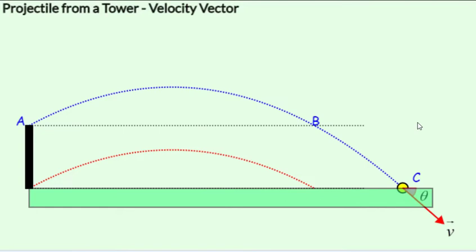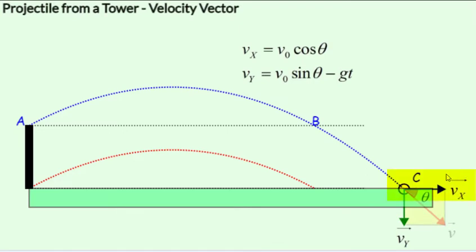What about the velocity vector? Let's watch the animation. The x component of the velocity vector, v0 cos of theta or vx, continues to remain constant right from the launch point to the topmost point to b and from b to c. So there is no change in the x component of velocity at all.